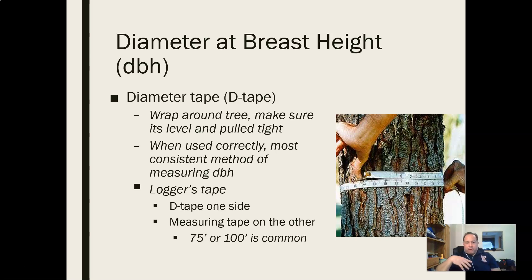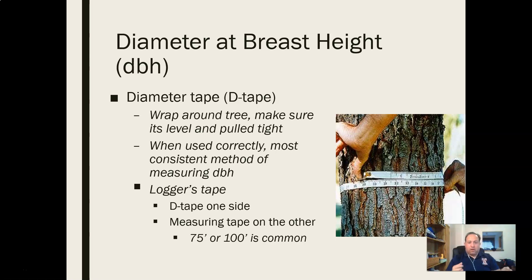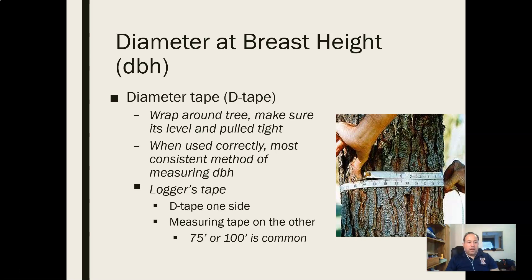With the diameter tape, it's a pretty simple procedure — you wrap it around the tree. The slower way is to put your clip in and walk around the tree. Once you get used to doing it a lot, especially with a logger's tape, you'll develop more of an Indiana Jones-style wrap: you take out a long section of tape and throw it around to your other hand, then wrap it tight around the tree. When you have to do this a few hundred times a day, walking around every tree takes a lot of effort.